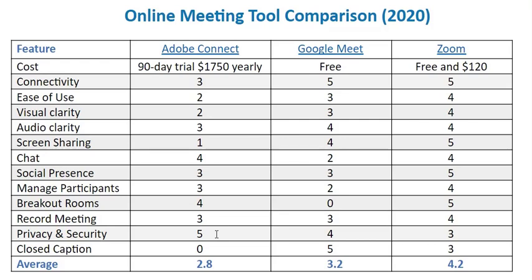In terms of privacy and security, I've rated Adobe Connect the highest because it is password protected and I haven't noted any issues with that program. Google Meet is also pretty secure as a Google product; however, you do give up some of your privacy when using any Google product. I rated Zoom the lowest because there have been a number of privacy and security issues reported recently; however, I believe Zoom is actually responding to those concerns and addressing the issues.